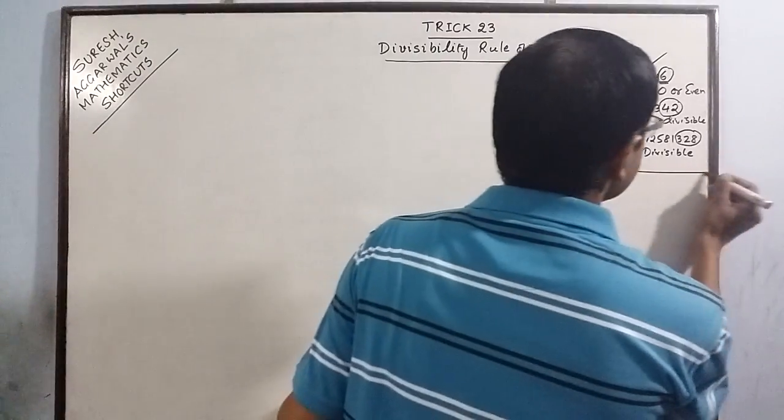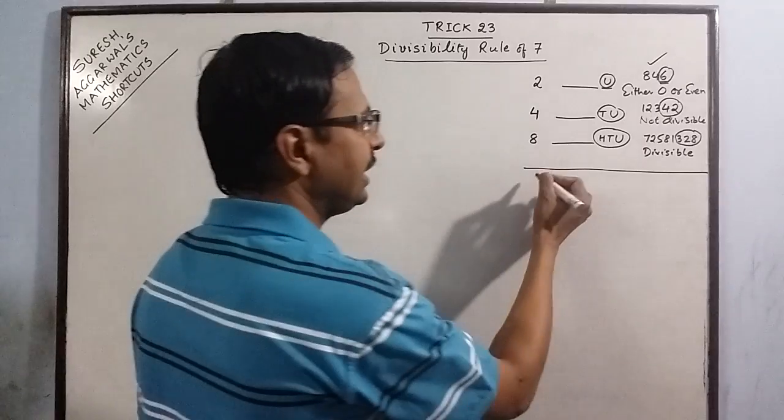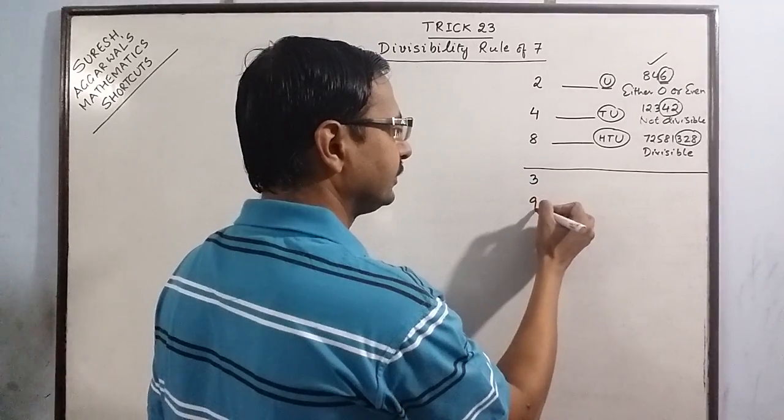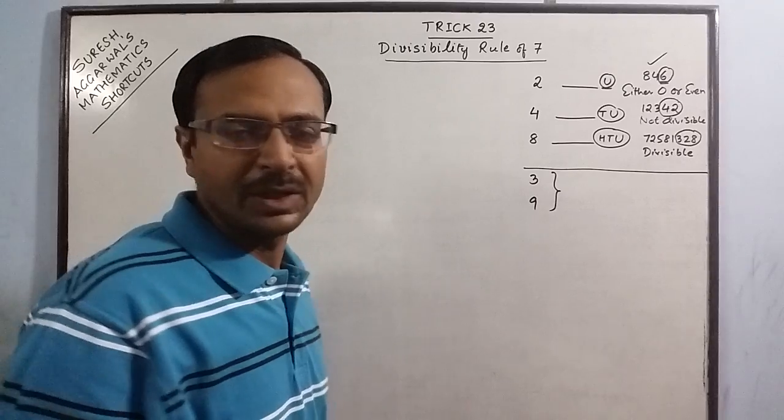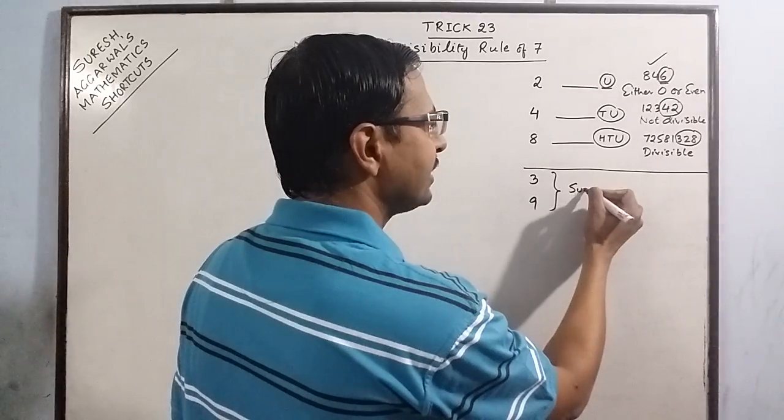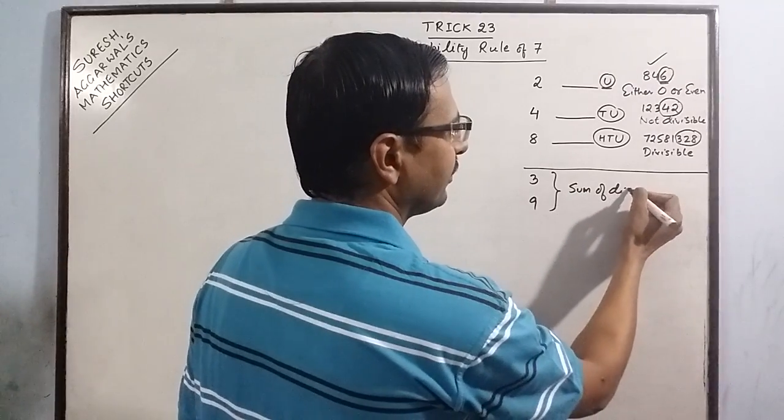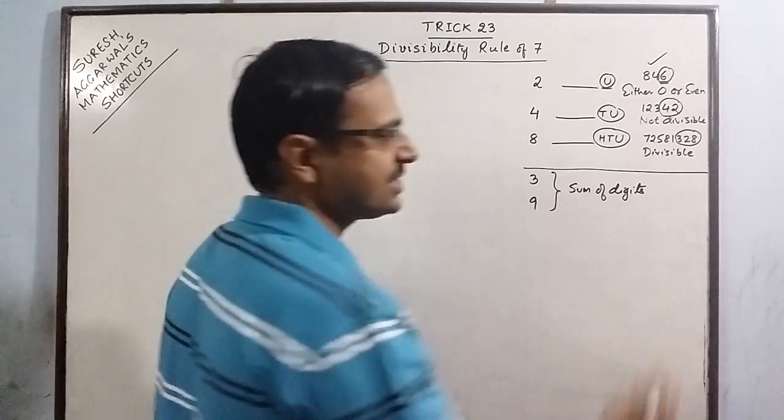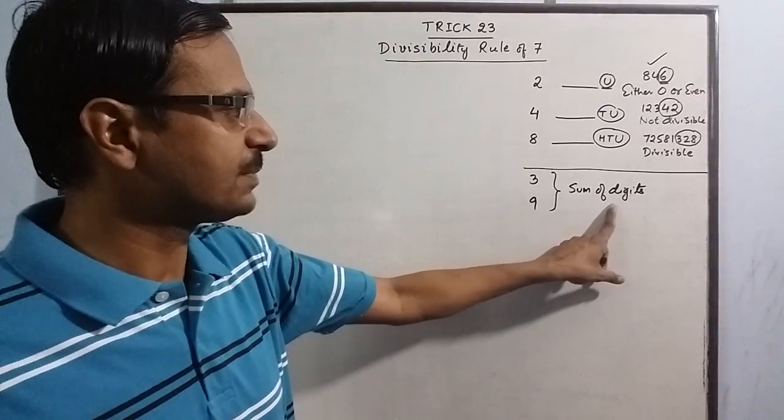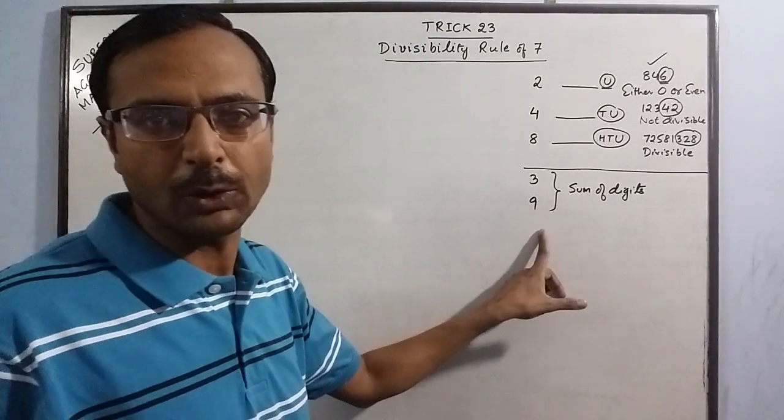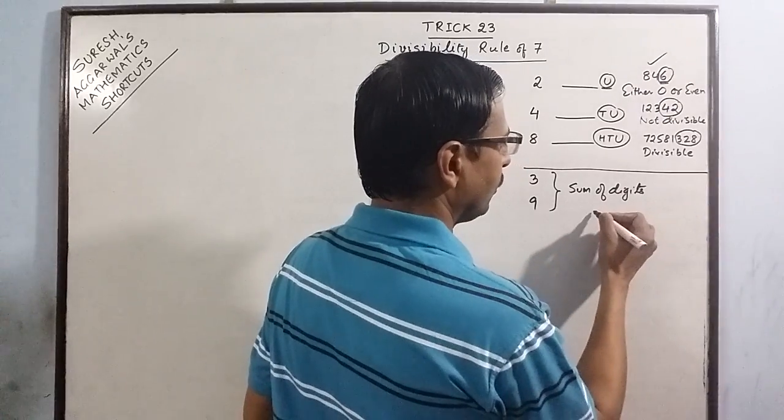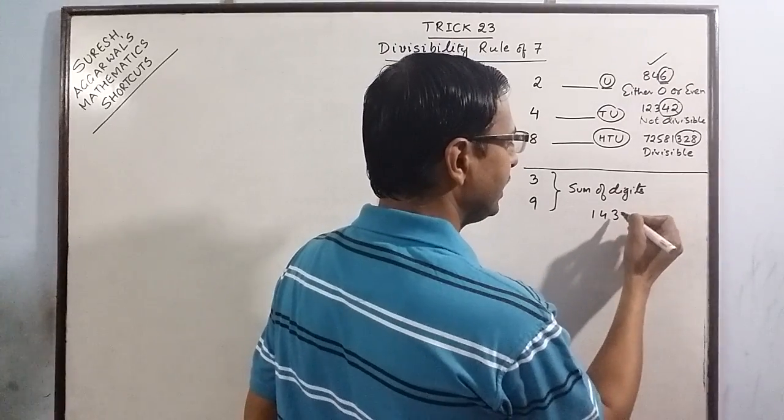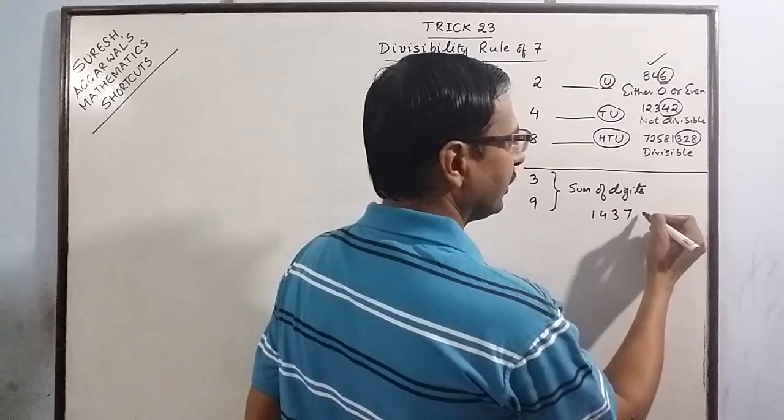After this we have the rule for 3 and 9. In both these numbers we find the sum of digits of the number and check whether the sum of digits is divisible by 3 or divisible by 9 or not. For example, suppose we have 143736.